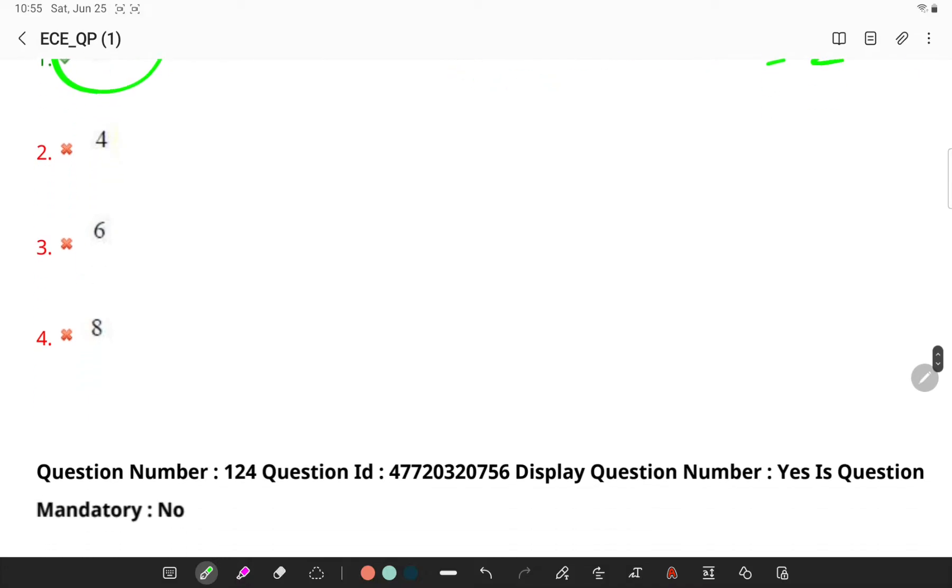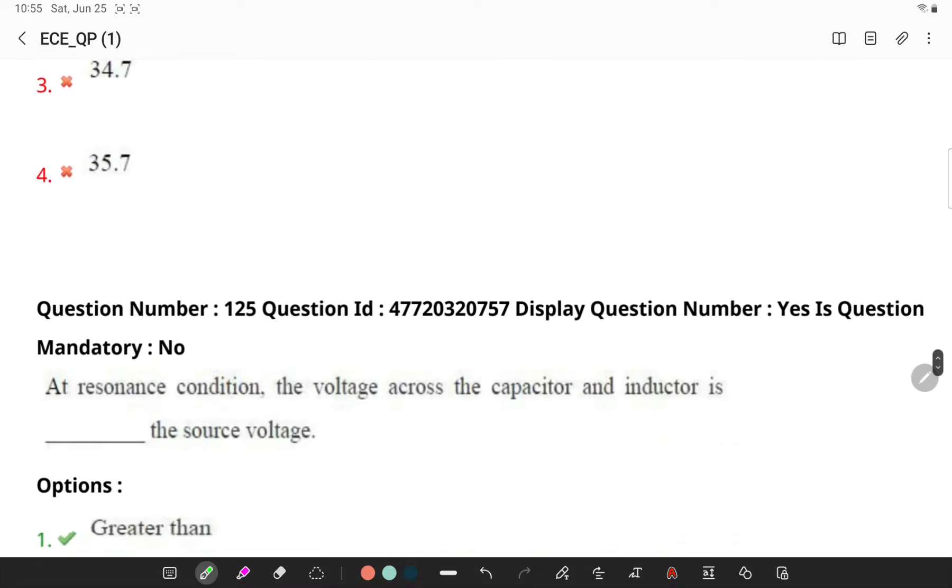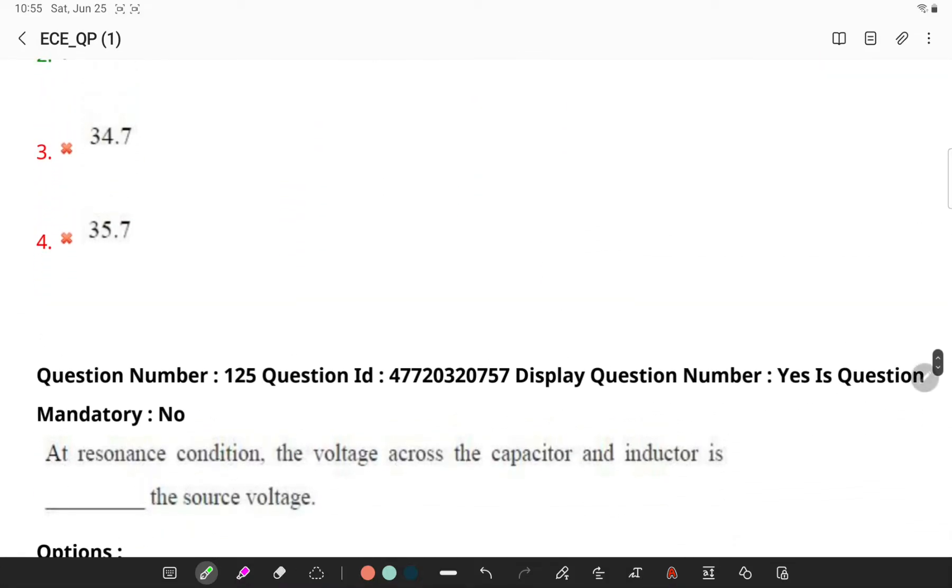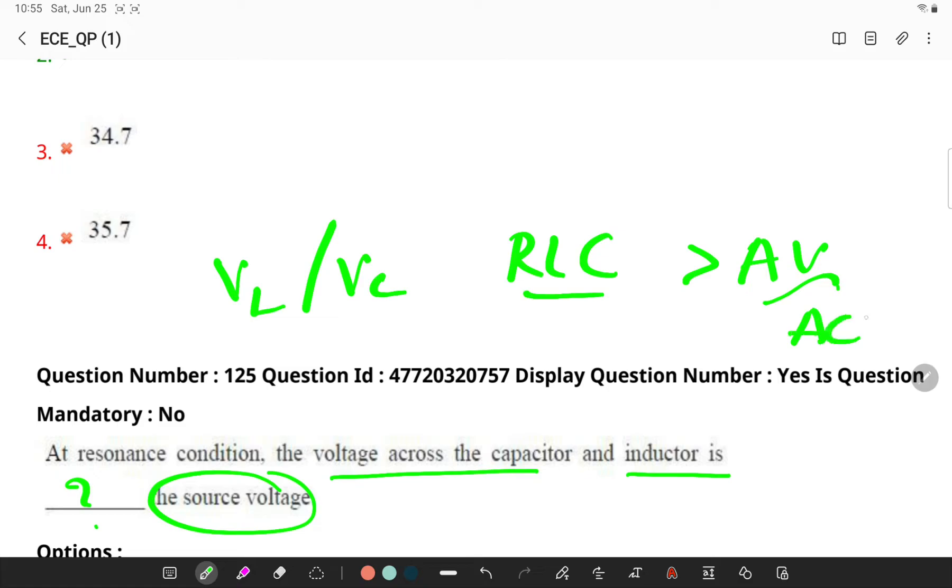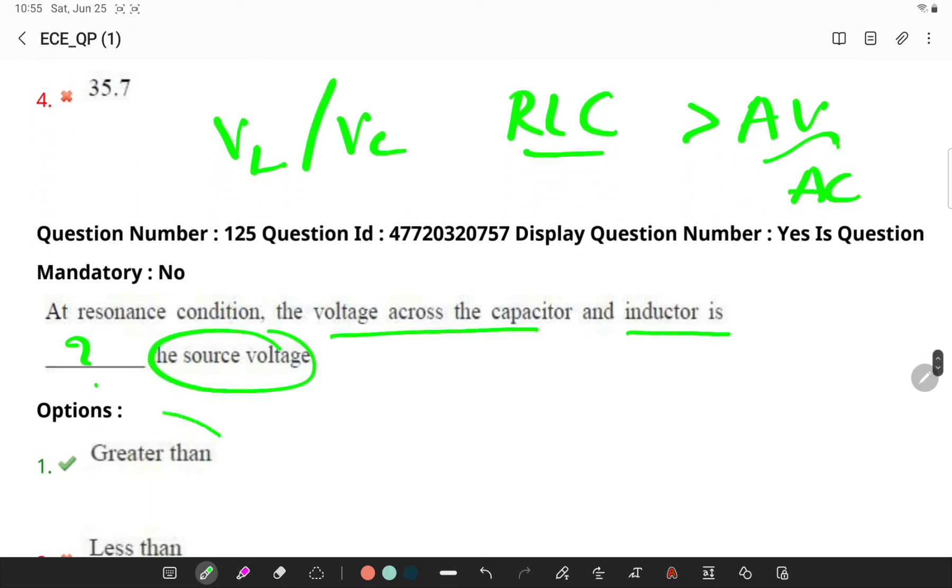Next, at resonance condition, the voltage across capacitor and inductor is what in case of a source voltage? So remember the voltage drop across an inductor or a capacitor in an RLC circuit can be greater than the applied voltage in case of an AC source. So it can be greater.